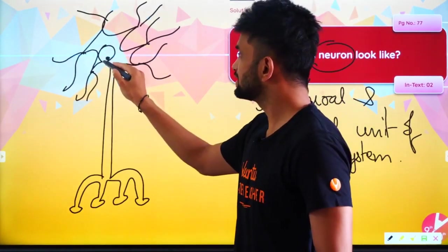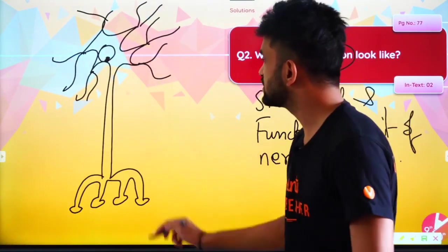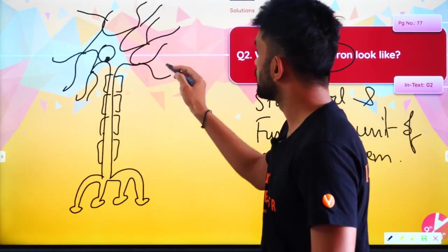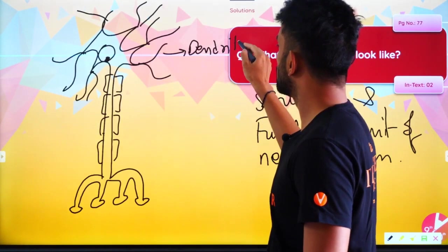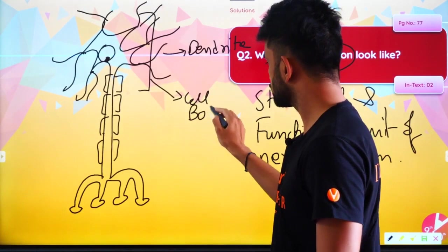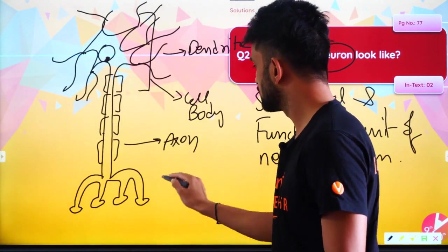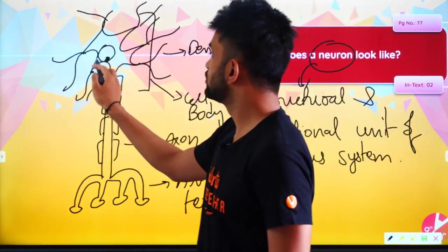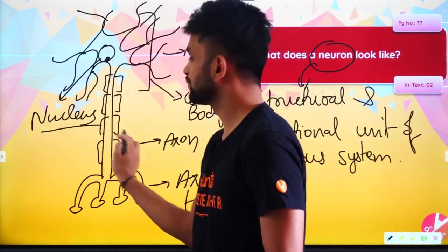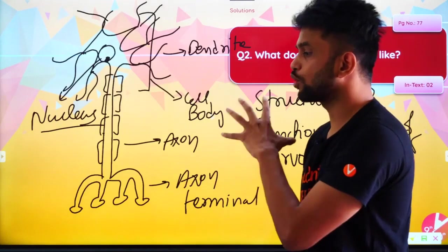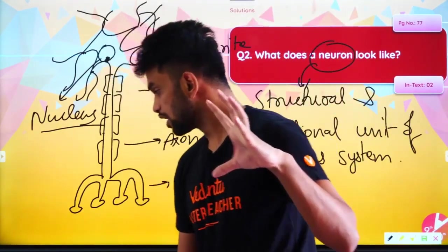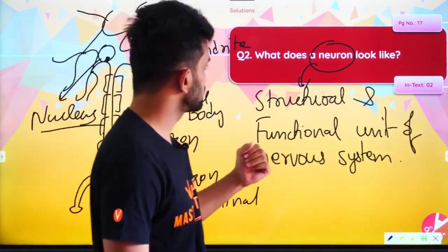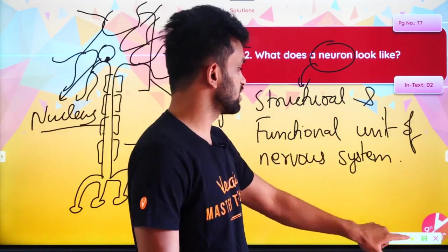There is no particular pattern — a neuron can be of any shape. You just need to draw it and label the parts properly. For example, this is the dendrite. This entire thing is the cell body. We have the axon, the axon terminal, and the nucleus. This is how you are supposed to draw it. Drawing a diagram does not mean it should be very beautiful or artistic — you just need to draw a representative diagram. This is how our neuron looks like; it is the structural and functional unit of the nervous system.